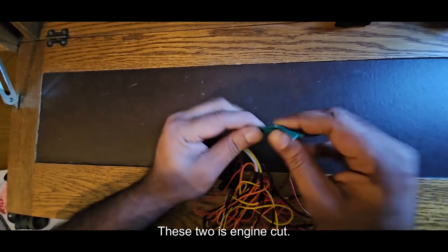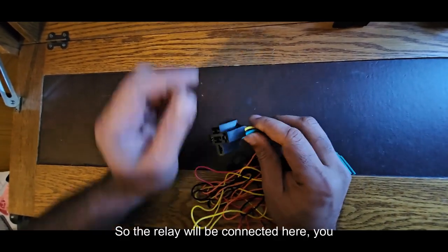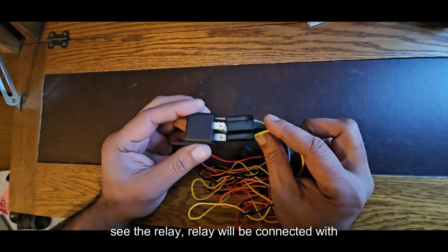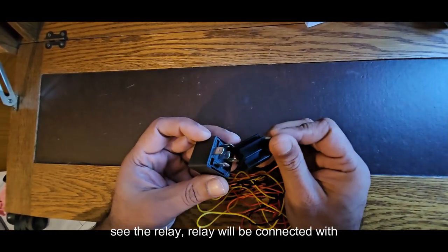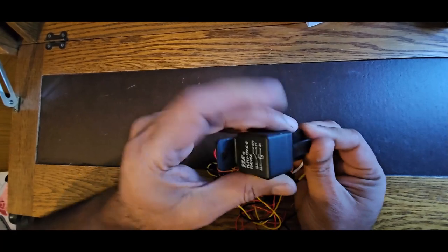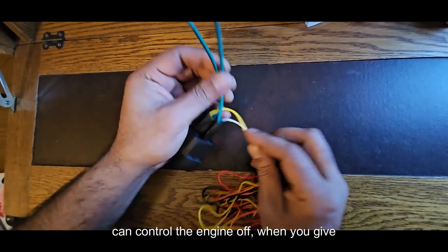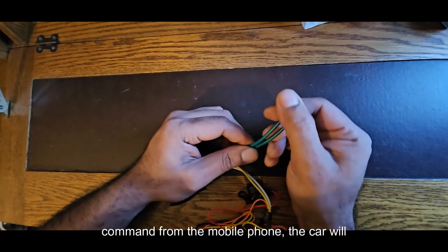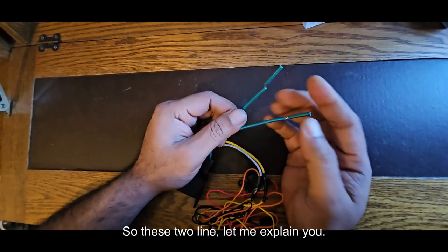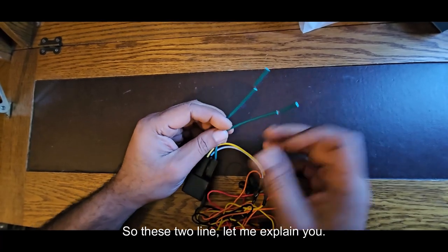These two are engine cut. The relay will be connected here. You see the relay will be connected with this wiring. It can control the fuel control. It can control the engine off. When you give command from the mobile phone, the car will shut down. So these two lines, let me explain the value.